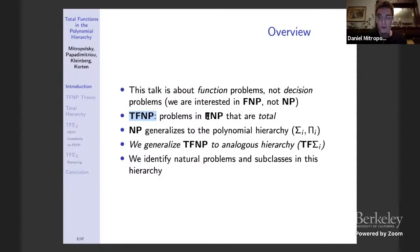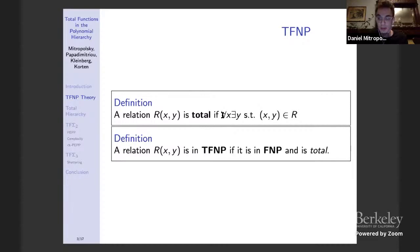Recall from complexity that NP generalizes to a polynomial hierarchy of classes sigma_i and pi_i. In our work, we generalize TFNP to an analogous hierarchy of total function classes TF sigma_i, and we identify natural problems and subclasses in this hierarchy. Our relation R(x,y) is total if for every x there's a y such that (x,y) is in the relation, and TFNP are those relations that are in FNP and are total.